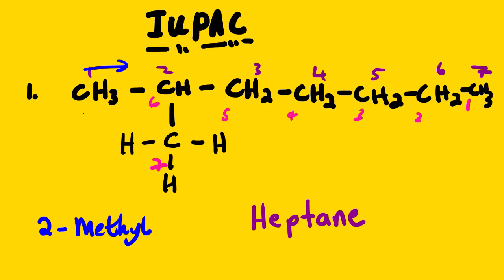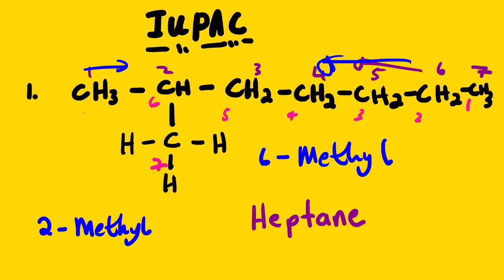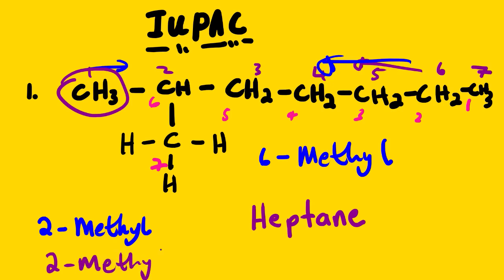Seven carbons with no double bond between carbon and carbon means the parent chain is heptane. If we take it the other direction, the methyl group would be on carbon number six. We have to compare 2-methyl and 6-methyl and always choose the lowest value. Since six is greater than two, we start from the side that gives carbon number two, and the correct IUPAC name is 2-methylheptane. Note there is no space between the two parts — it is one word.